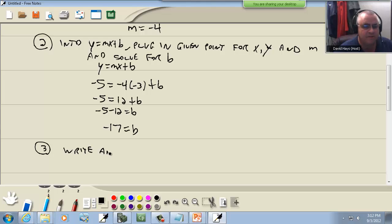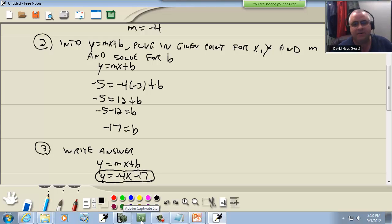And then step 3, we're going to write our answer. We were wanting to find the equation of the line initially, so we combine together what we found in step 1 and step 2. In step 1 we said M was negative 4, and in step 2 we found B was negative 17, so our answer is Y equals negative 4X minus 17.